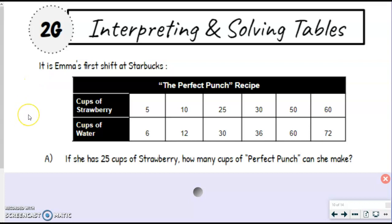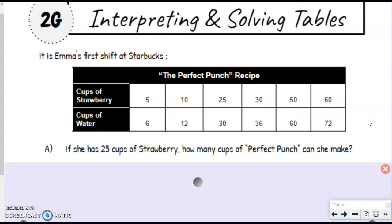You might remember this example using Emma's Starbucks Perfect Punch Recipe from level one. It's completed for you already because we already did the equivalent ratio part in level one. This is now going to be asking questions from this table, which we did before, but we're going to take it one little step further. That's why it's in level two this time.